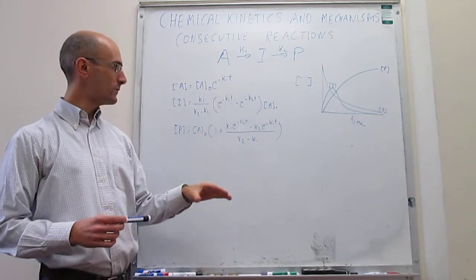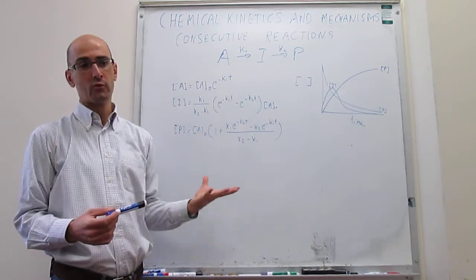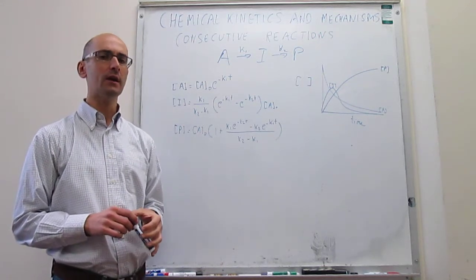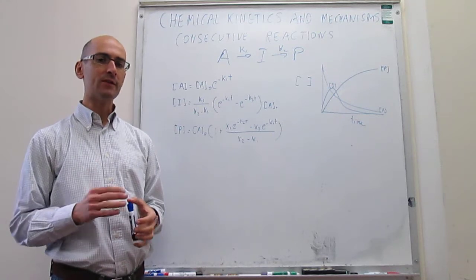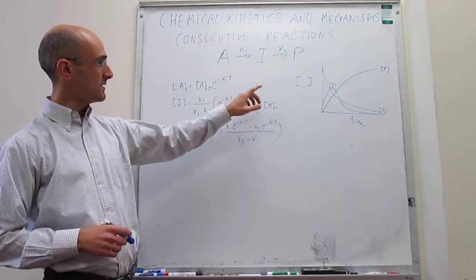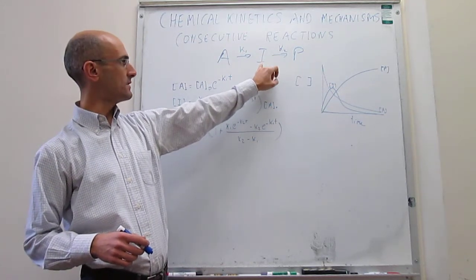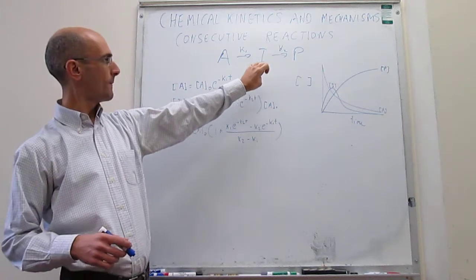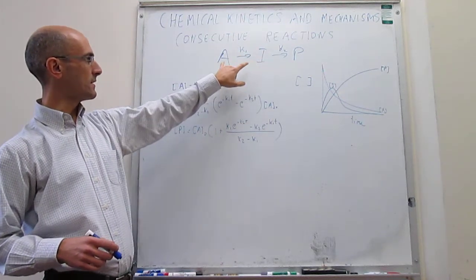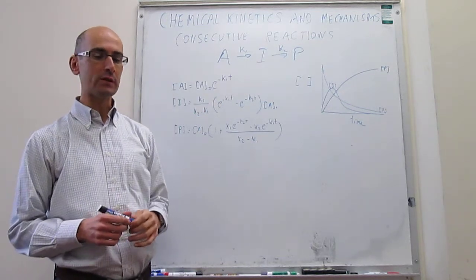Now what we're going to do is take this analysis and apply one approximation. We're going to examine how this turns out to be under a very specific set of conditions. The very specific set of conditions is that this K2 rate constant that controls the reactivity of the intermediate to products is much greater than the K1 rate constant that controls the reaction of reagents going into the intermediate.